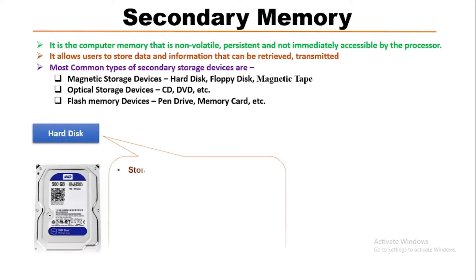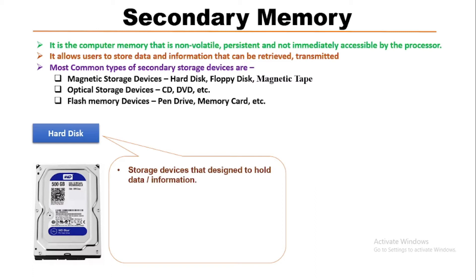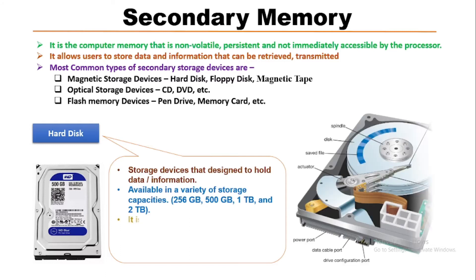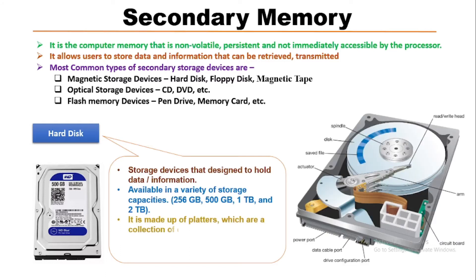Now we will know about the hard disk. A hard disk is a storage device designed to hold data or information permanently. The available storage capacities include 256 GB, 500 GB, 1 TB, 2 TB, etc. On the left hand side, this is the outlook of a hard disk — it is made up of platters, which are a collection of disks.